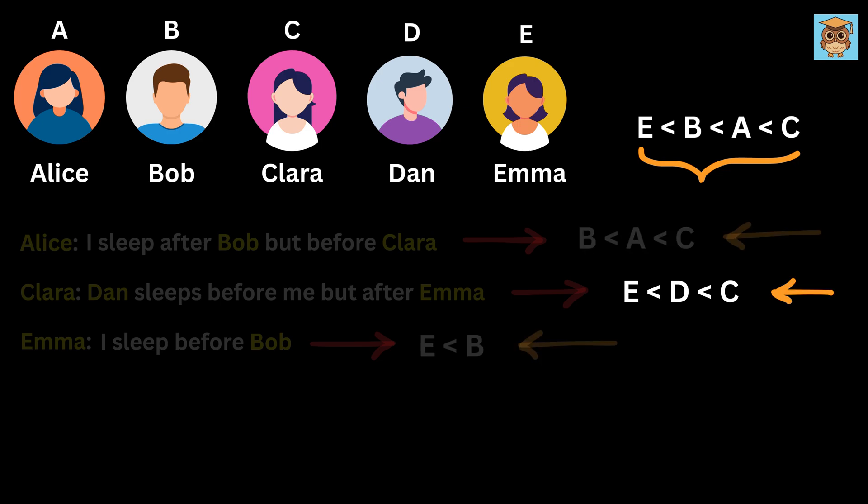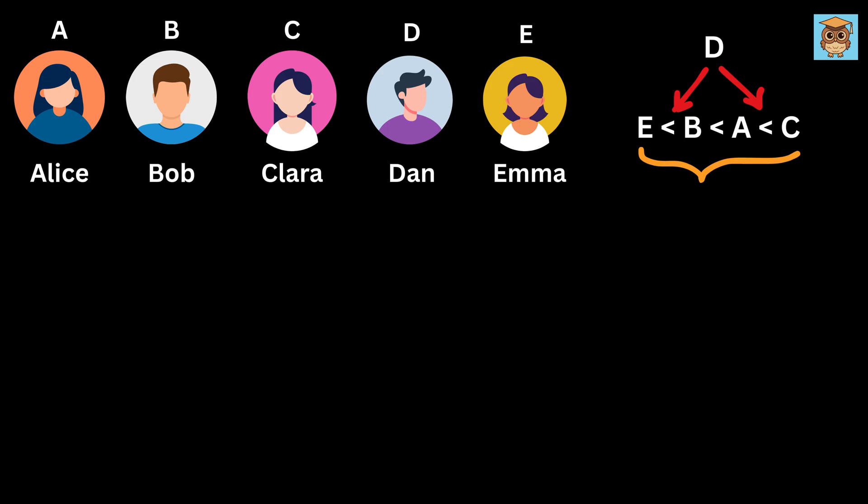Now from Clara's statement, we are told that E is less than D, and D is less than C. This means D will come somewhere in between E and C in this list, and thus it is clear that the first one to sleep in the village is Emma, and the last one is Clara.